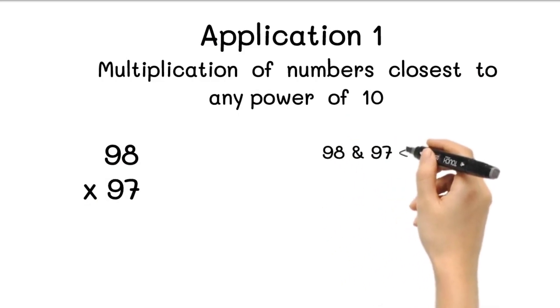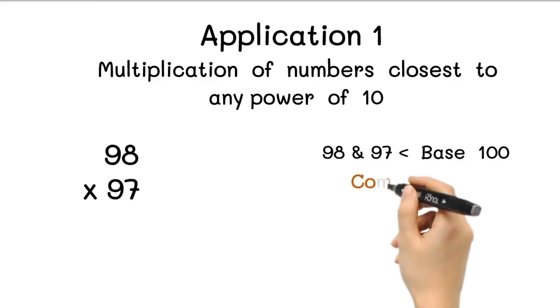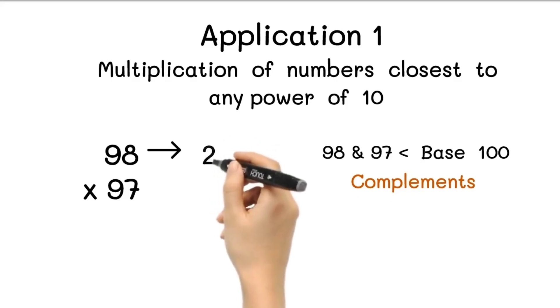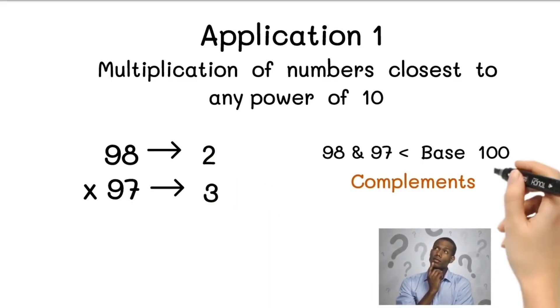Here both numbers 98 and 97 are less than the working base 100. In the first step we will take the complement of both numbers. For 98, the complement is 2, and for 97, the complement is 3 with respect to the base 100. If you don't know how to find the complement of a number, please watch Day 1 video of Vedic Math full course. The link is given in the description box.